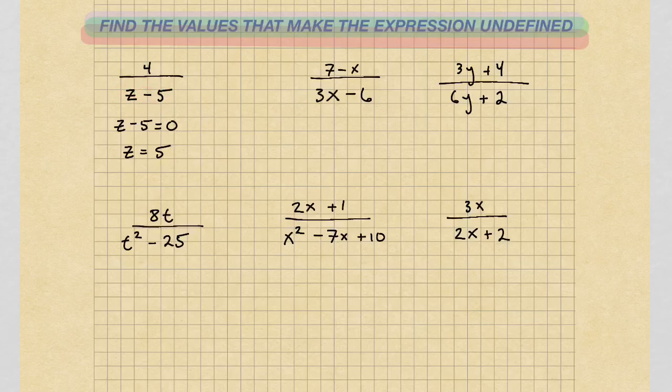Now I've had people ask me why can't you have the denominator equal to 0, or why does that make it undefined? The best explanation for that is: let's say you have any number — let's just say 3 times 0. 3 times 0 equals 0. Everybody knows that.